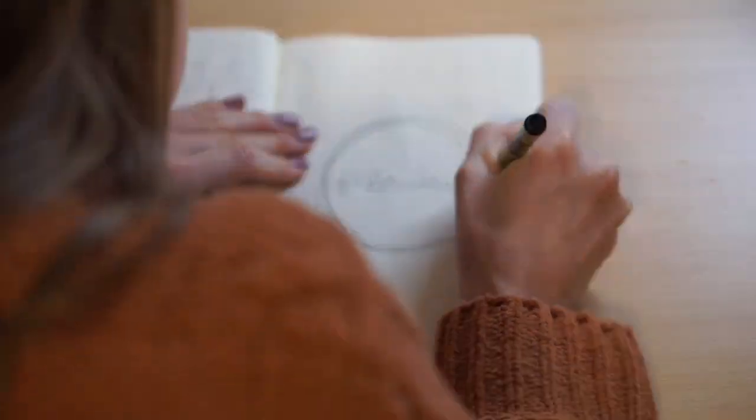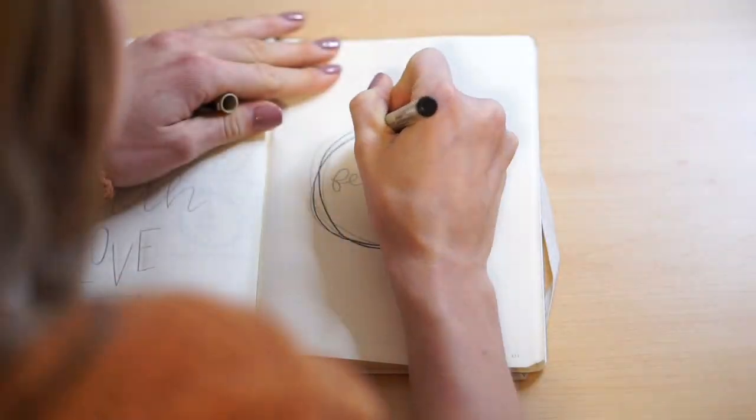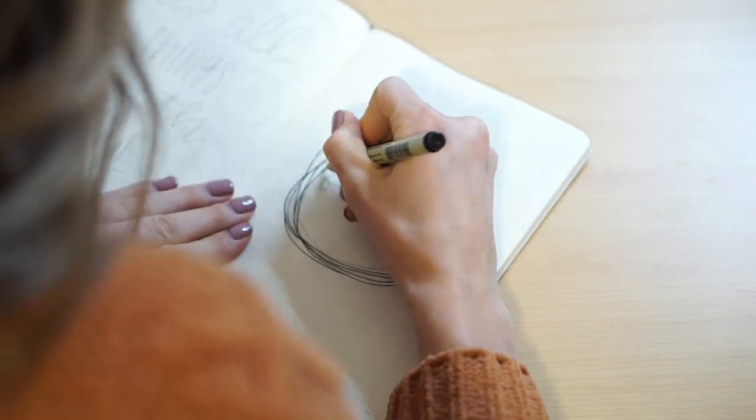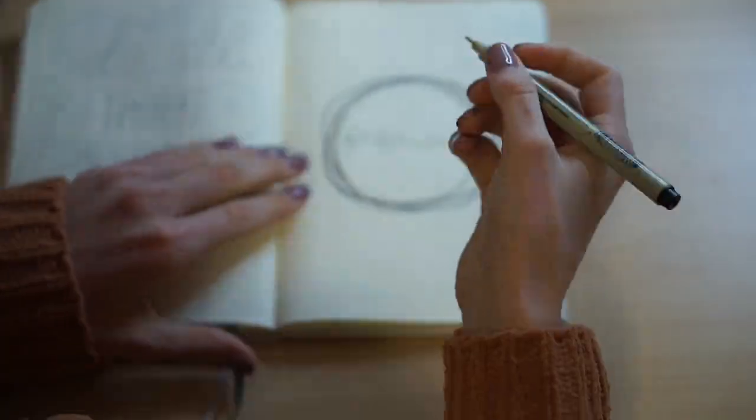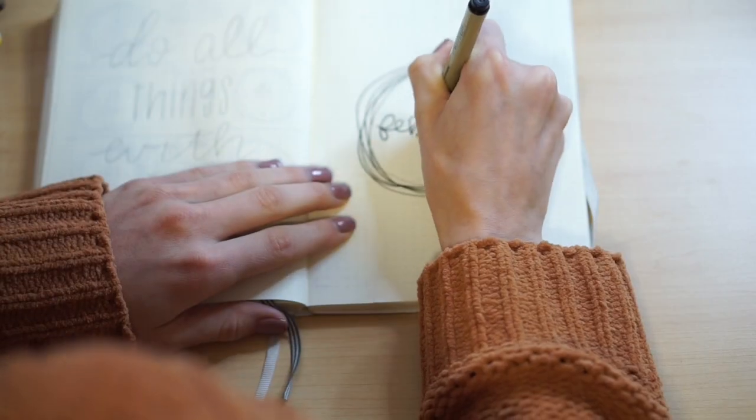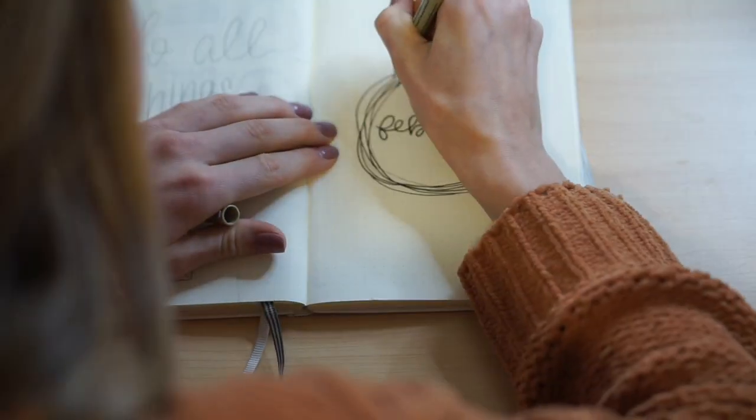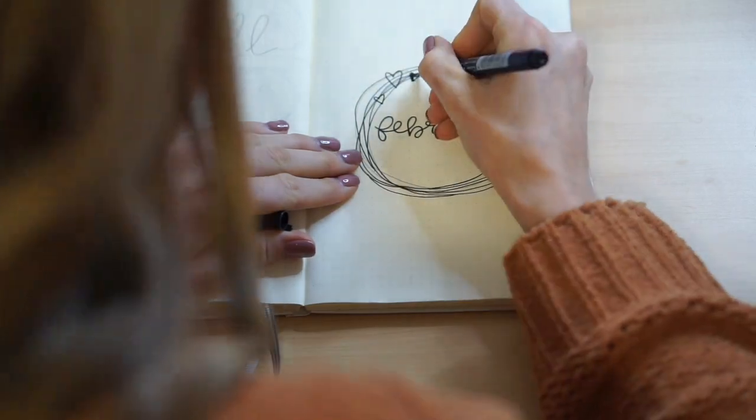Alright everyone, so we are starting off my February plan with me with a title page and a little quote page. As you guys can see, I am starting off by encircling the word February with a bunch of messy circles. I thought it was cute. This is what Amanda Rachely did and I really liked it.